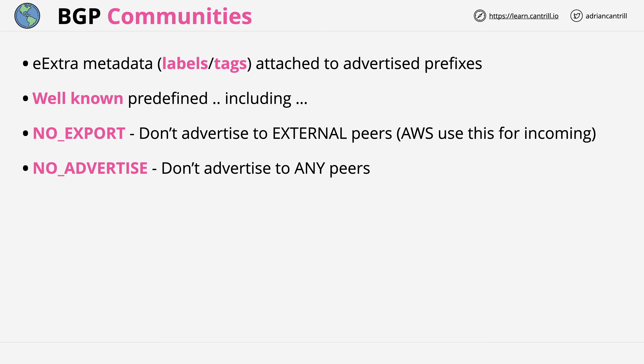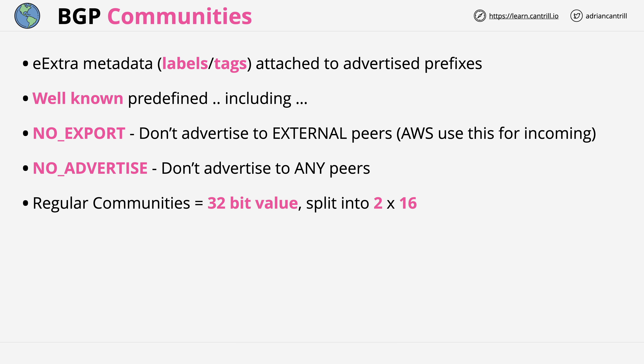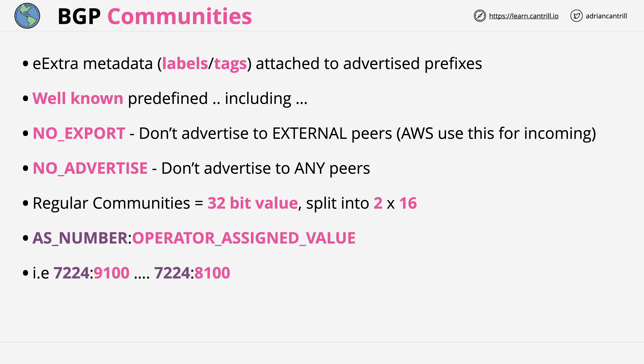In addition to these well-known predefined ones, there are regular BGP communities. These are 32-bit values split into two 16-bit portions. The format is traditionally the AS number which is advertising the prefix, and then an operator-assigned value. Examples are 7224:9100 and 7224:8100, where 7224 is Amazon's AS number and 9100 and 8100 are values decided by AWS.